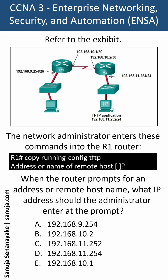Refer to the Exhibit. The network administrator enters these commands into the R1 router: copy running-config tftp. The system prompts for the address or name of the remote host. The question is: when the router prompts for an address or remote host name, what IP address should the administrator enter at this prompt?